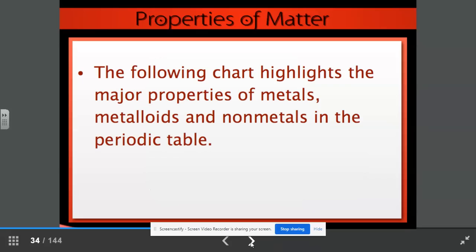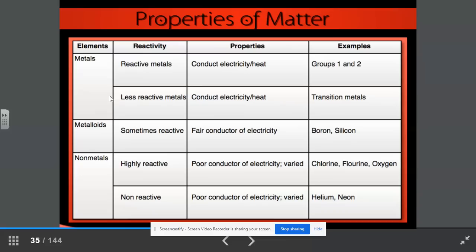The following chart highlights the major properties of metals, metalloids, and nonmetals in the periodic table. So metals, we have the reactivity. We have reactive metals and less reactive metals. These conduct electricity and heat and are found in groups one and two. The less reactive metals conduct electricity and heat, and some examples would be the transition metals. Metalloids are sometimes reactive. They are fair conductors of electricity, which means they're not the greatest. Boron and silicon would be examples of metalloids.